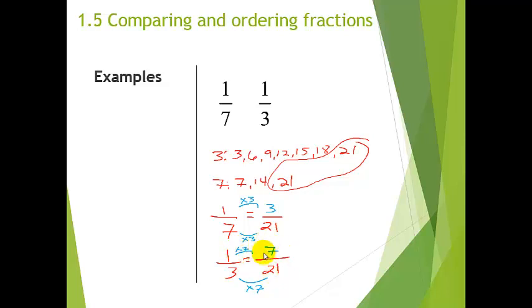So, if I was going to compare these, yeah, I automatically know that this one is going to be greater. Because, 7 slices out of the 21 is much bigger than 3 slices out of the 21. All right.